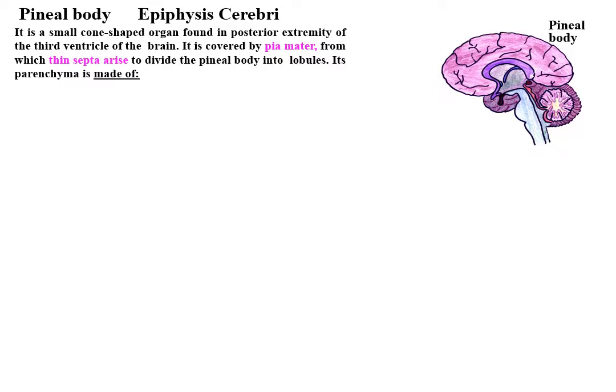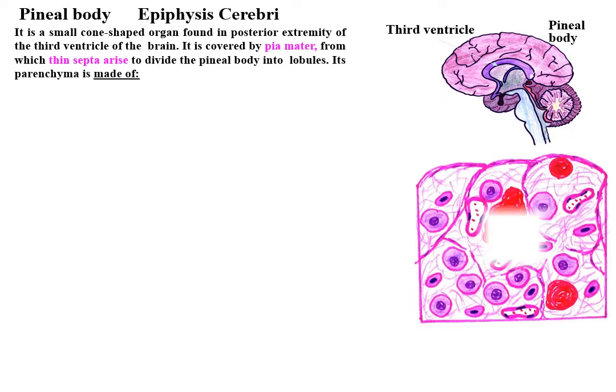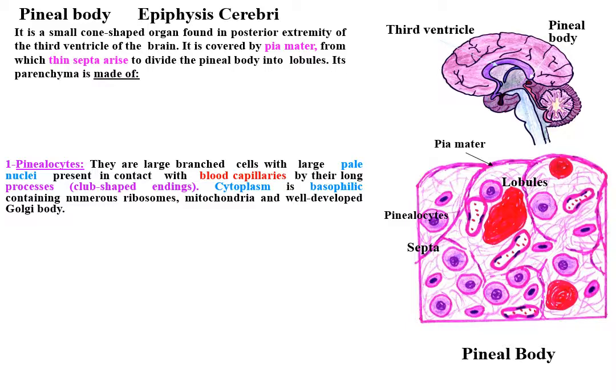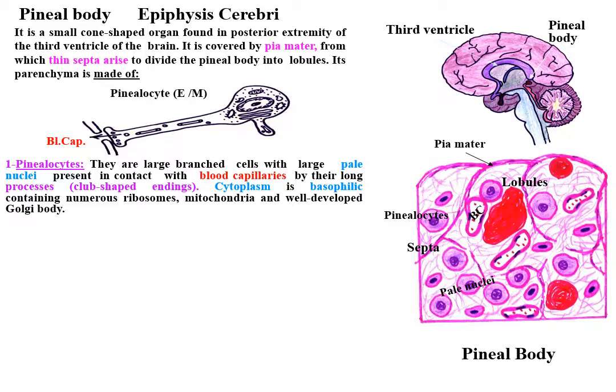The pineal body, or epiphysis cerebri, is a small cone-shaped organ found in the posterior extremity of the third ventricle of the brain. It is covered by the pia mater, from which thin septa arise to divide the pineal body into lobules. Its parenchyma is made of pinealocytes, large branched cells with large pale nuclei present in contact with blood capillaries by their long processes having club-shaped endings. Their cytoplasm is basophilic, containing numerous ribosomes, mitochondria, and well-developed Golgi bodies.